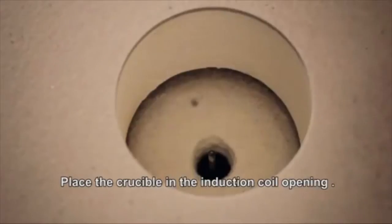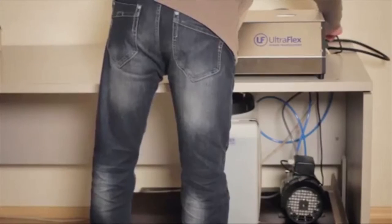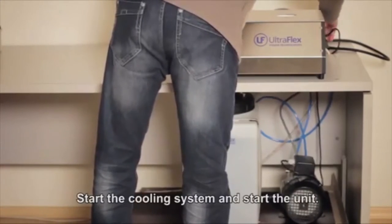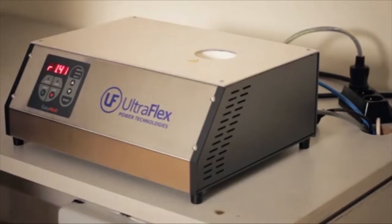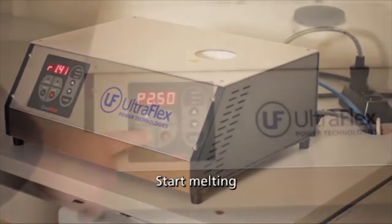Place the crucible in the induction coil opening. Start the cooling system and start the unit. Start the melting.